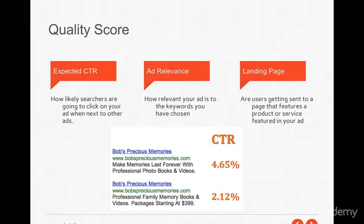What goes into quality score? What they're trying to do is determine the expected click-through rate — how likely searchers are to click on your ad versus another. Below there's a quick example of very similar ads, but one gets more than double the percentage of clicks. This goes into testing, which I'm going to show you how to do. Sometimes you're just speaking better or more targeted to the customer, and sometimes price is a driver.